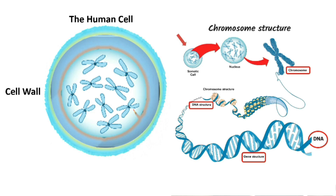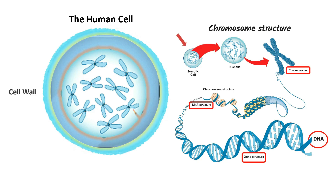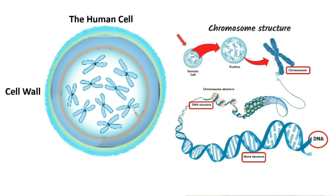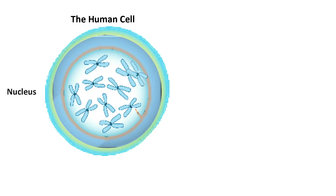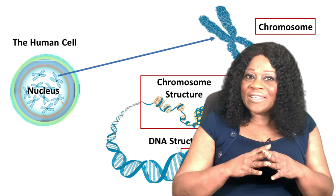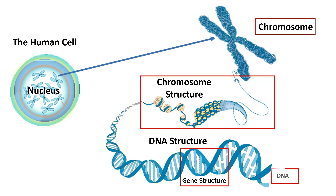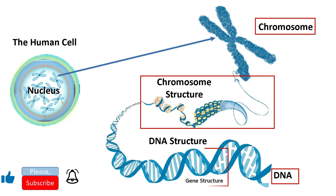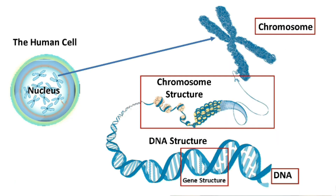The human cell is the basic building block of life and consists of a cell wall, cytoplasm, and a nucleus that primarily stores the DNA. Located in the nucleus of most living cells are chromosomes — thread-like structures of deoxyribonucleic acid, DNA, and protein that carry genetic information in the form of genes. Genes are the individual instructions that tell the body how to develop and function.